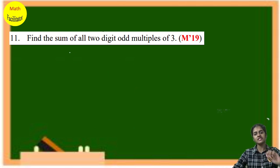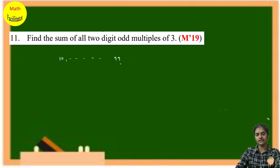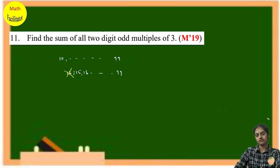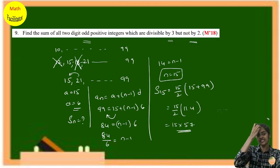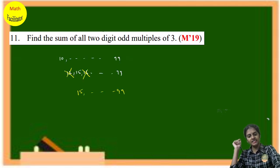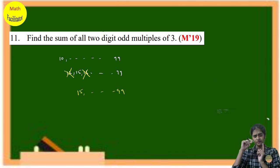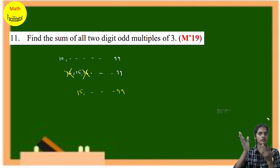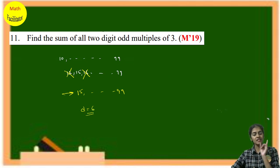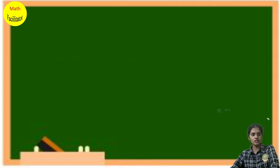Next: find the sum of all two-digit odd multiples of 3. This is essentially the same as the previous odd-multiples-of-3 question. Odd means even numbers are removed, so the AP is again 15, 21, ..., 99 with d = 6. The answer method is identical — same model asked differently.